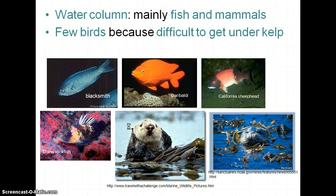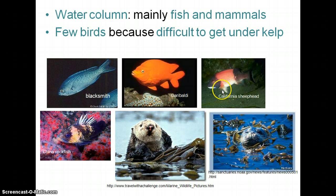In the water column in a kelp forest, you will actually have fish and mammals that live there. You don't really have a lot of birds because birds can get caught in the kelp — it's really hard to get under the kelp and come back up to the surface to breathe, so they don't really dive underneath. But you do get harbor seals and sea otters that will dive down without a problem. Different types of fish you'll see include the blacksmith, the garibaldi — the California state fish — California sheephead, and China rockfish. Birds will sit on the surface and pick things off, but rarely dive beneath the canopy.